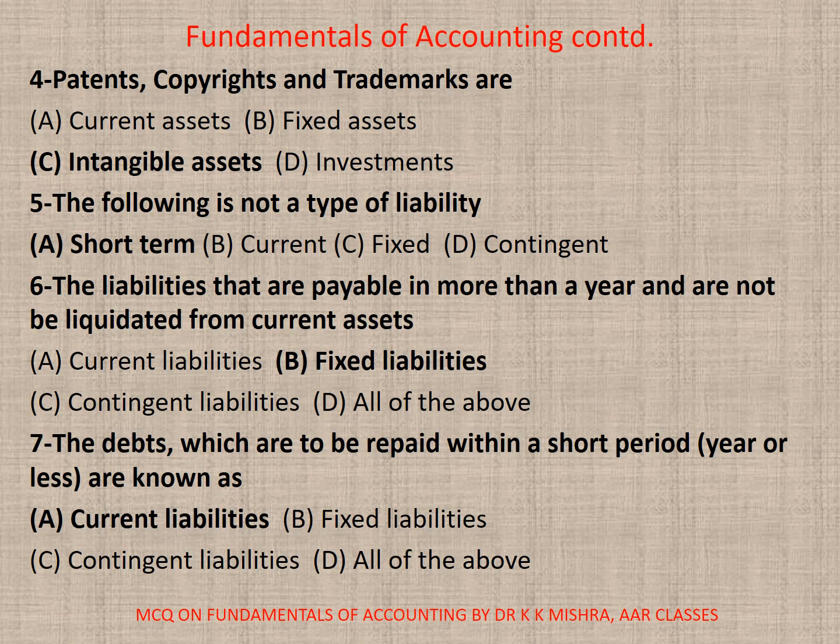Question 4: Patents, Copyrights and Trademarks are A. Current Assets, B. Fixed Assets, C. Intangible Assets, or D. Investments. The correct option is C. Intangible Assets.